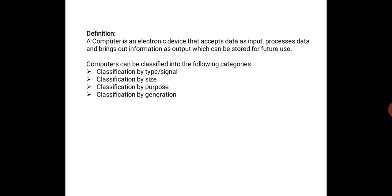The computers can be classified into the following categories: 1. Classification by type or signal. 2. Classification by size. 3. Classification by purpose. 4. Classification by generation.